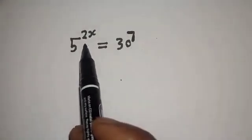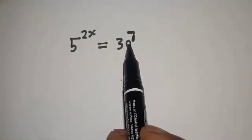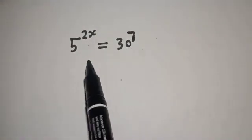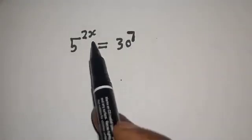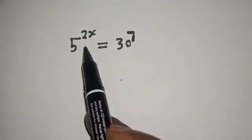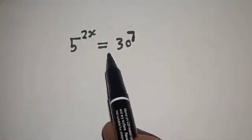5 raised to power 2s is equal to 30 raised to power 7. Hi everyone, welcome to my class. In this class we want to find the value of s from this equation.